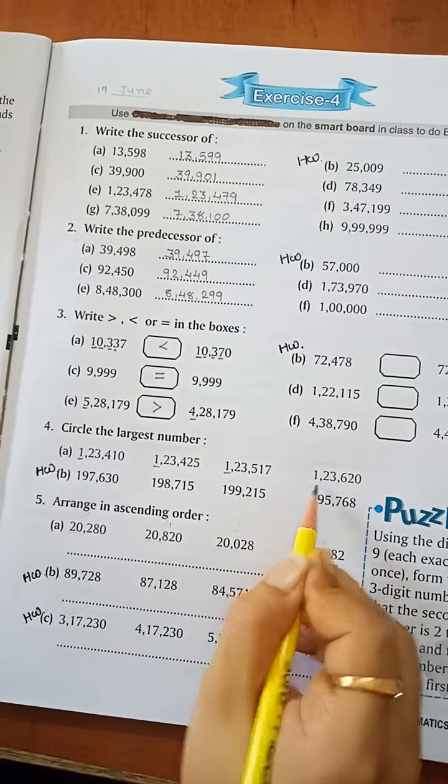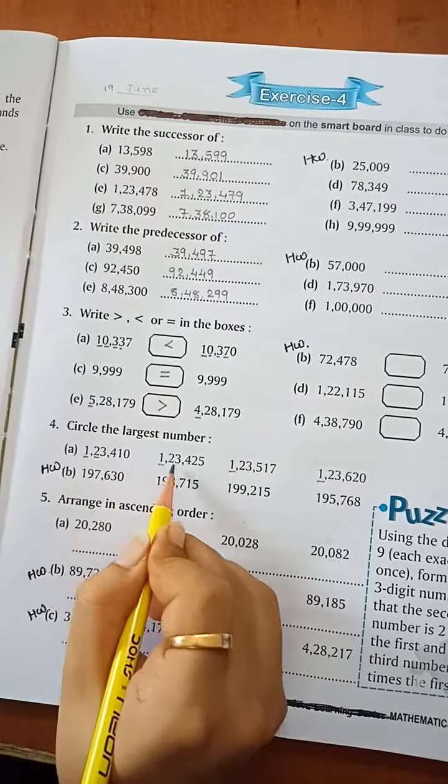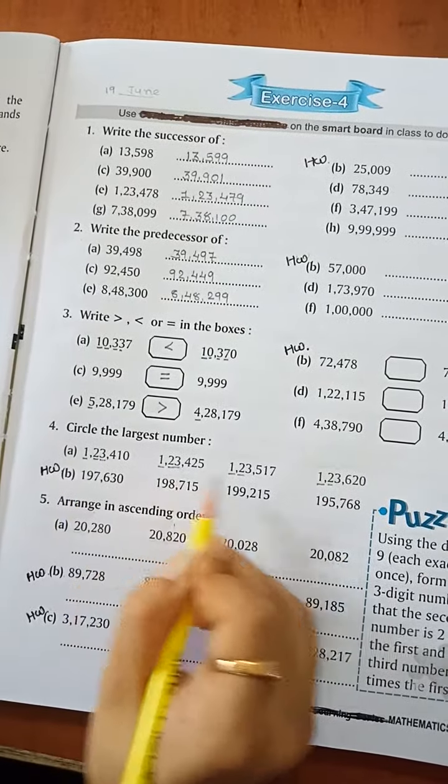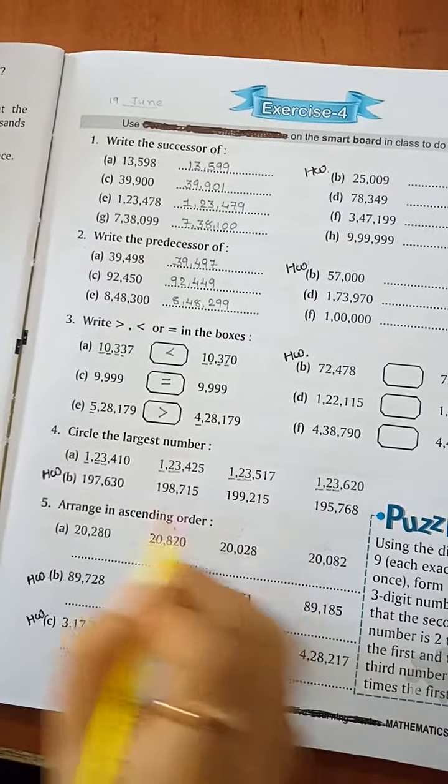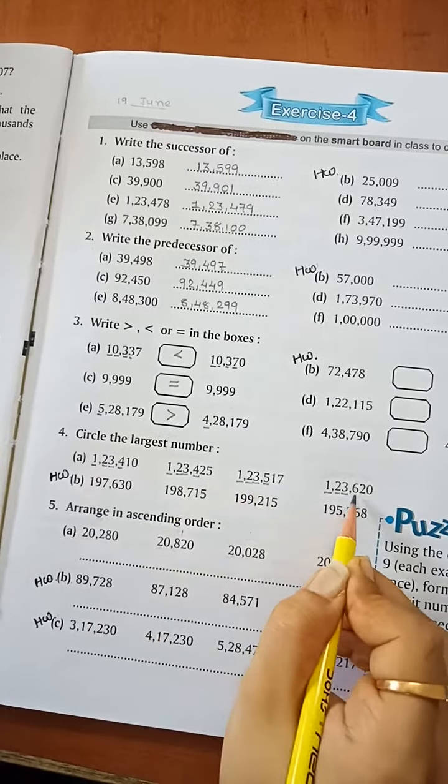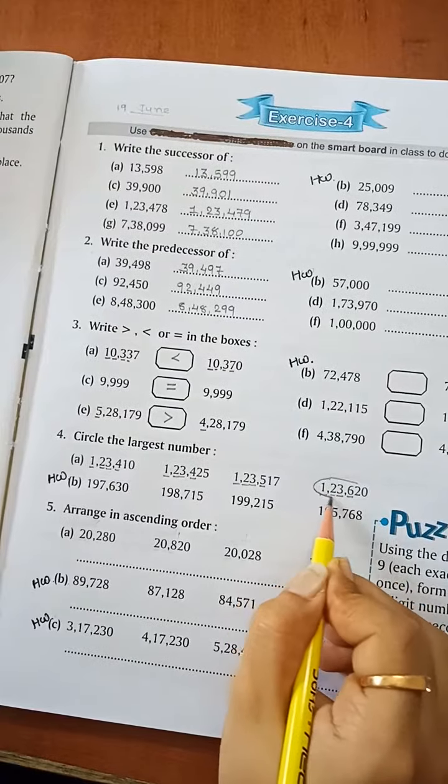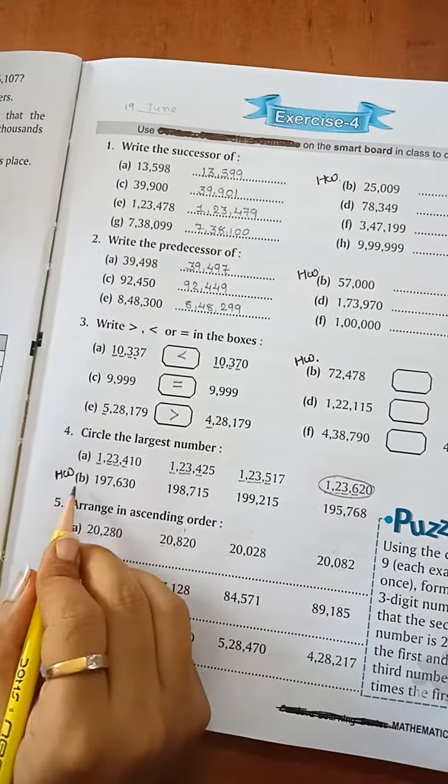First digit: 1, 1, 1, 1. Same. Second digit: 2, 2, 2, 2. Same. Third digit: 3, 3, 3, 3. Same. Fourth digit: 4, 4, 5, 6. Which is biggest number? 6. Circle this number. Homework.